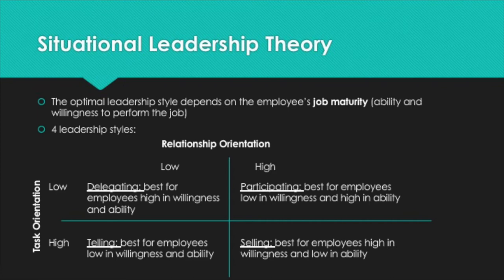On to Situational Leadership Theory. This theory proposes that the optimal leadership style depends on the employee's job maturity, which depends on ability and willingness to perform the job. The delegating leadership style is best for subordinates high in both ability and willingness. In contrast, the telling leadership style is best for subordinates who are low in both willingness and ability — you literally have to tell them what to do step by step.